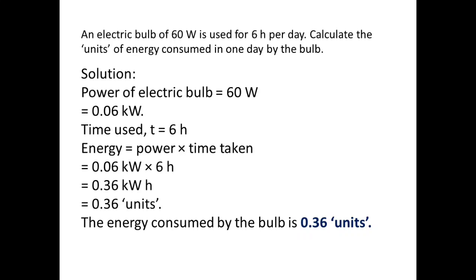An electric bulb of 60 Watts is used for 6 hours per day. Calculate the units of energy consumed in 1 day by the bulb. The power of electric bulb is 60 Watts. We have to take it in kilowatts, so 0.06 kilowatts. The time used is 6 hours. Energy equals power times time, so 0.06 kilowatts into 6 hours. We got 0.36 kilowatt hours, or 0.36 units. The energy consumed by the bulb is 0.36 units.